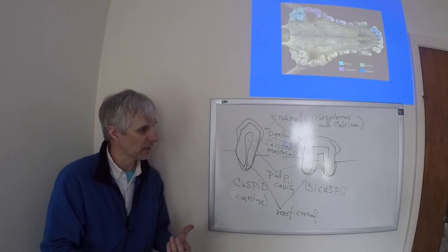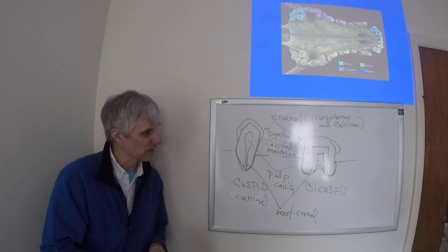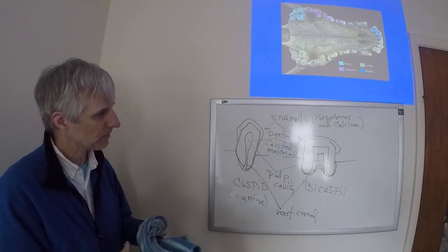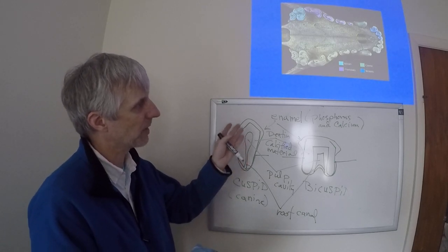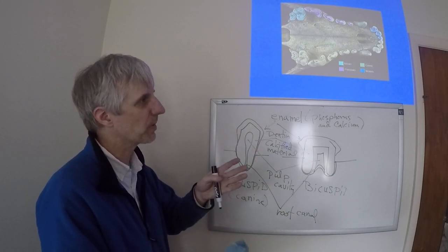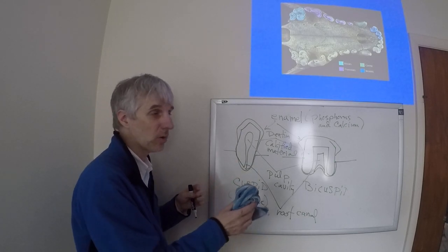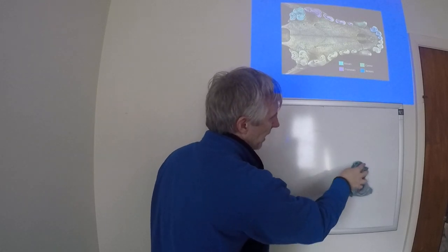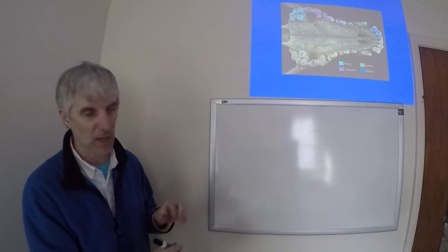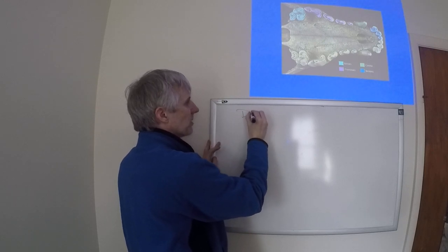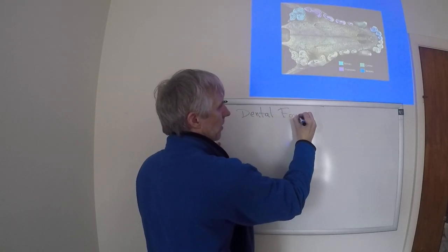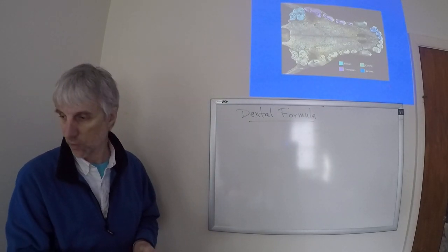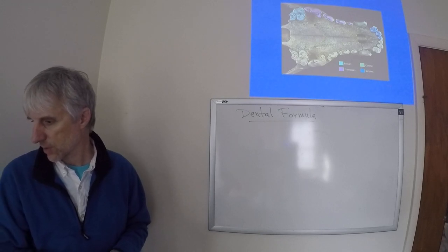Different species are going to play around with the different numbers of these bicuspids and cuspids, or different numbers of molars, canines, premolars, and incisors. So the way we identify species is based on their dental formula, which is a description of the number of each type of tooth that they have.